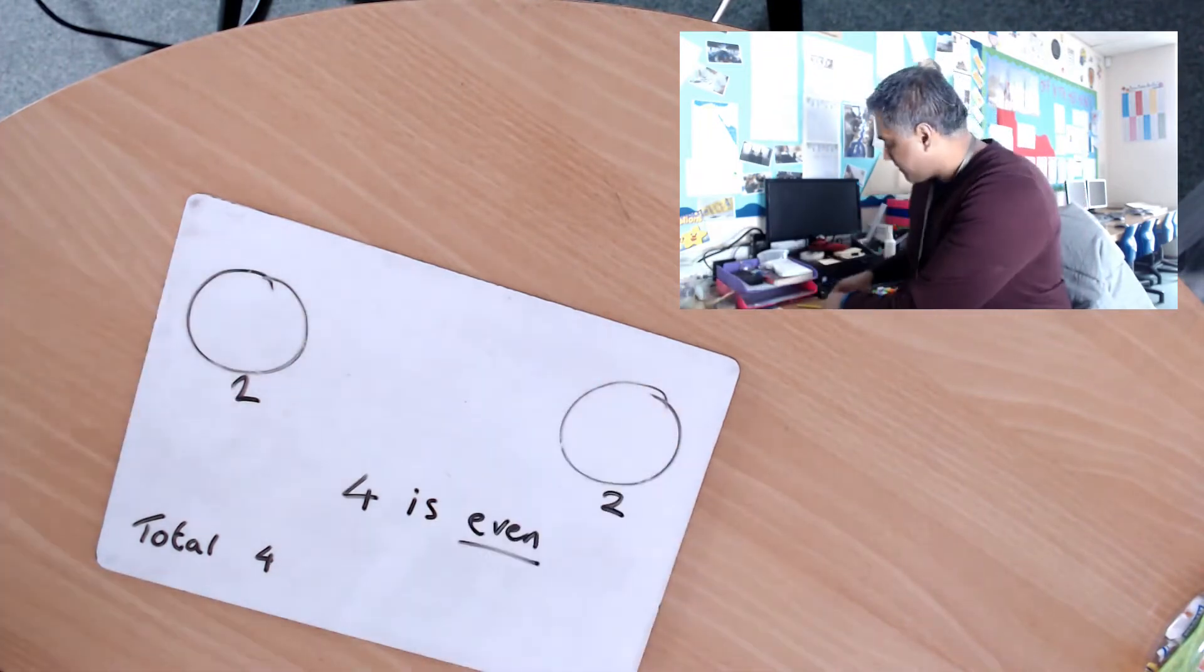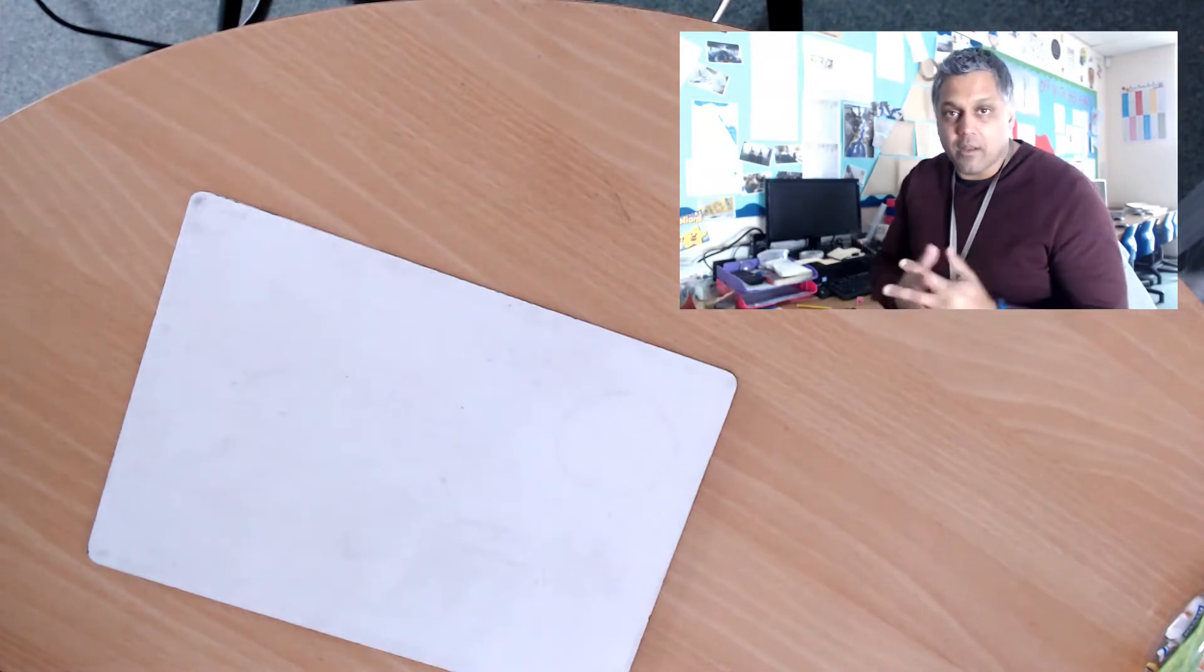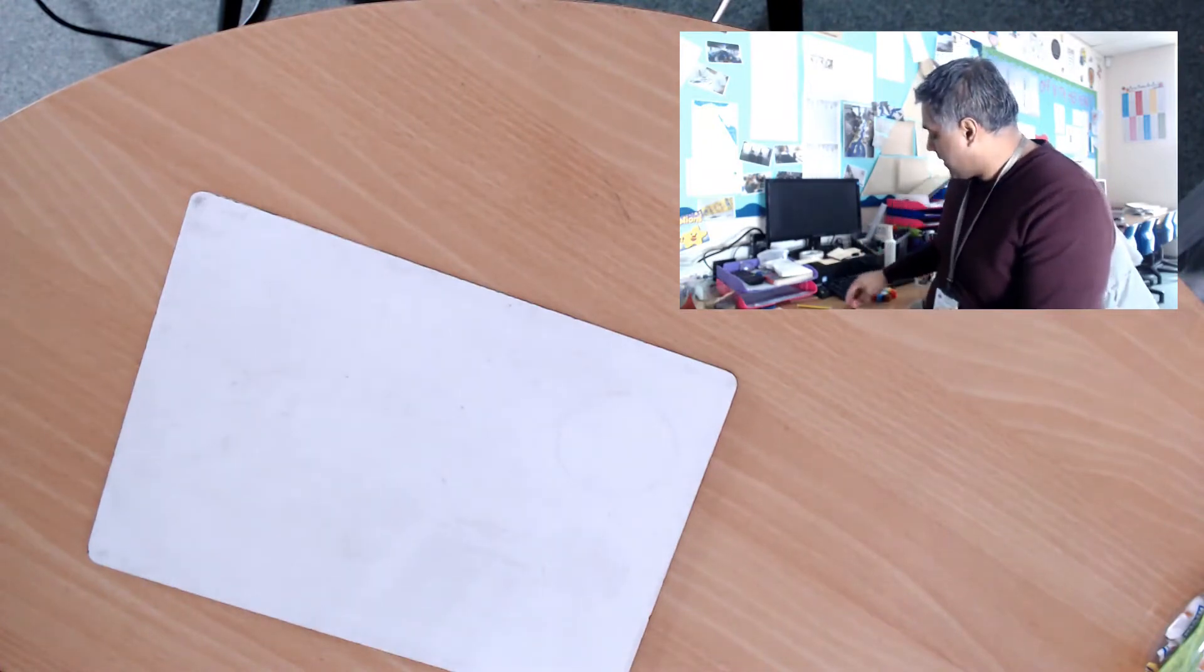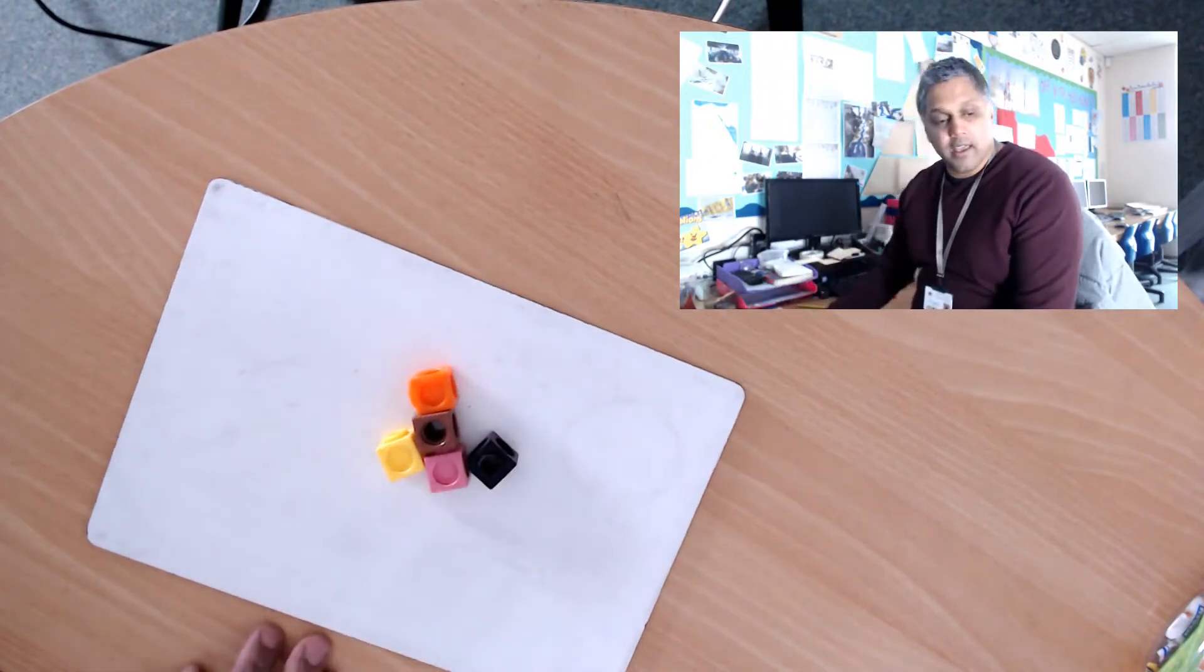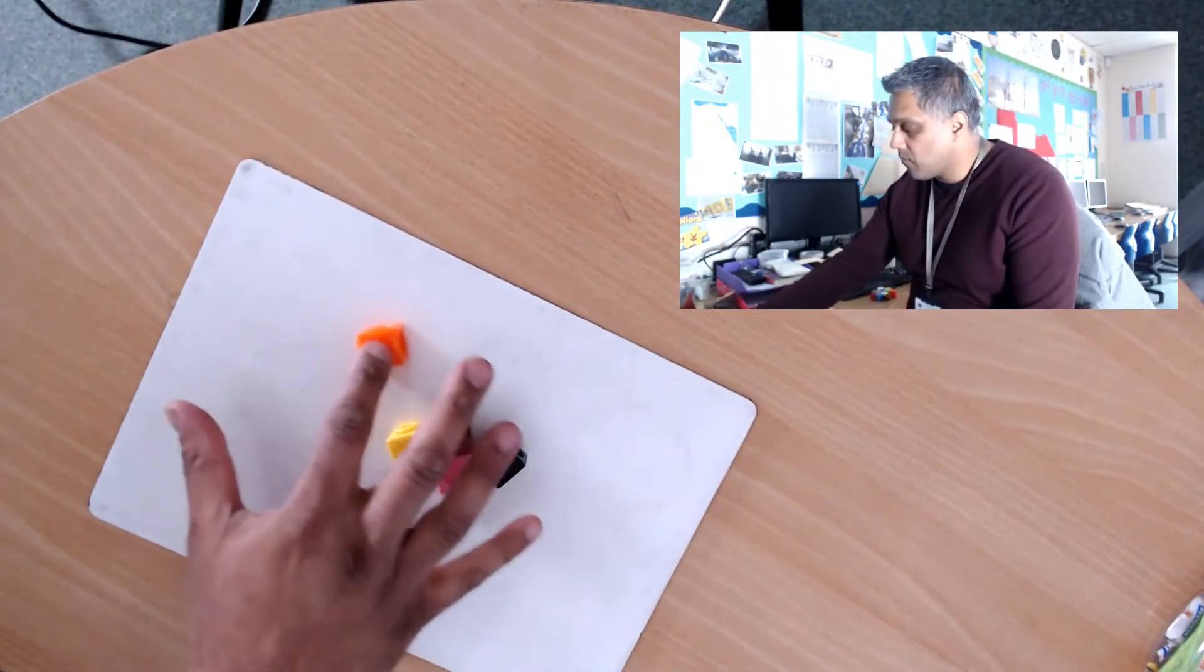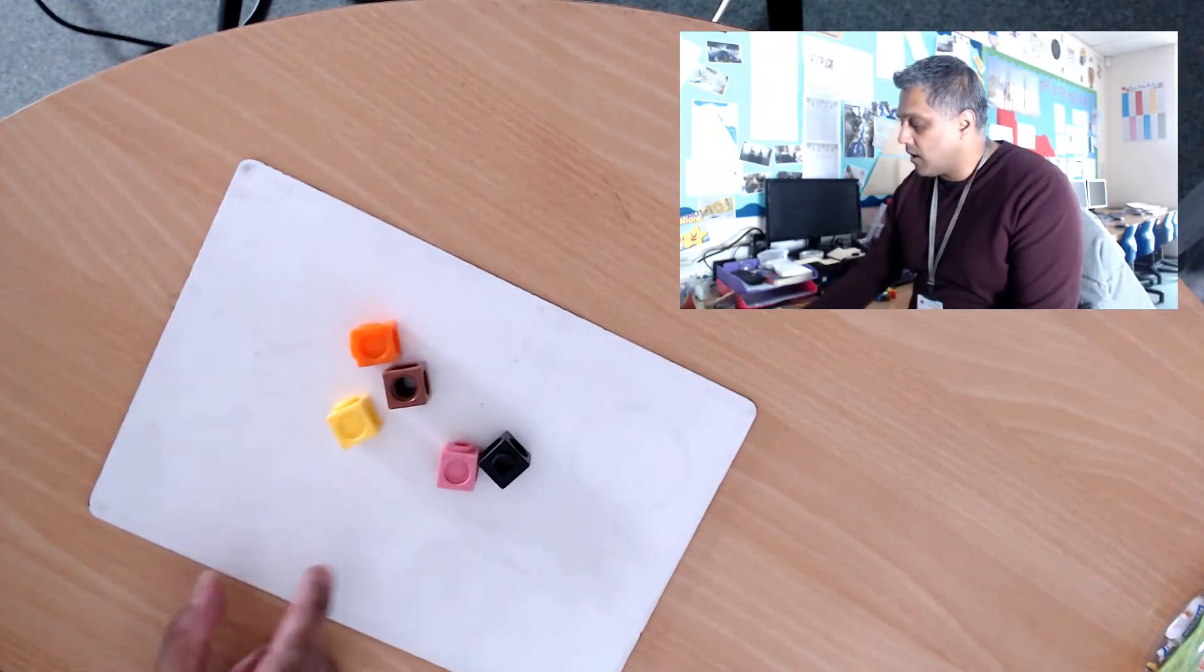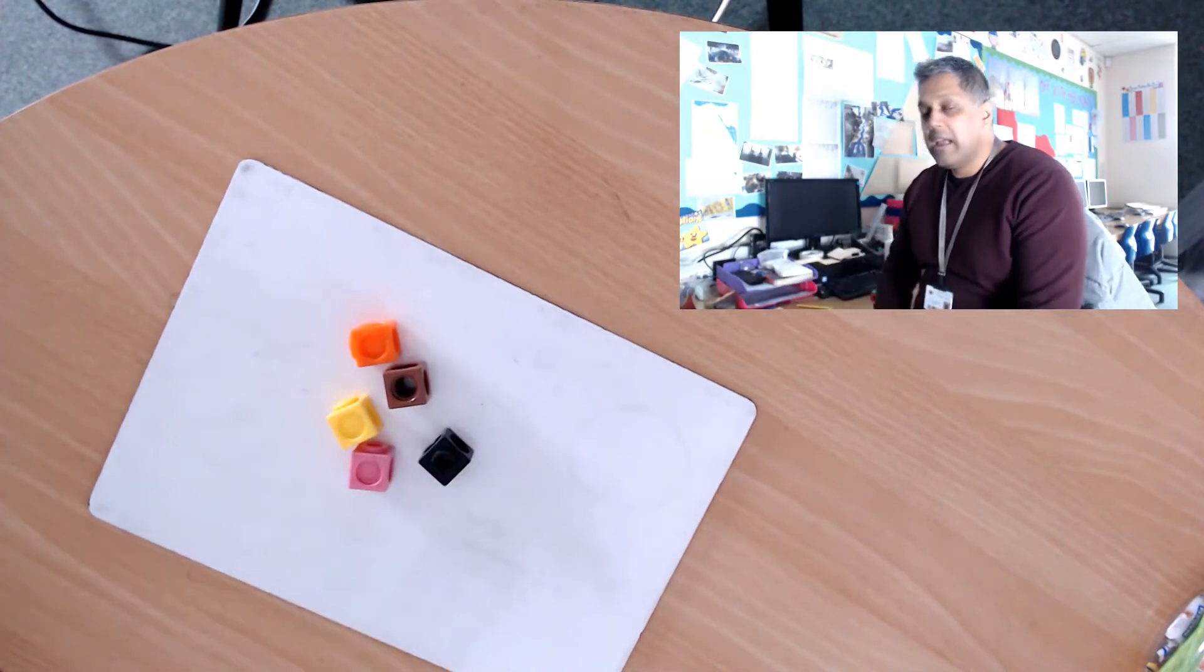Let's try to change the number. That was an even number. Now let's have an odd number. So again, let me get some blocks or objects. Okay, so there are some objects there. Let's count them: one, two, three, four, five.